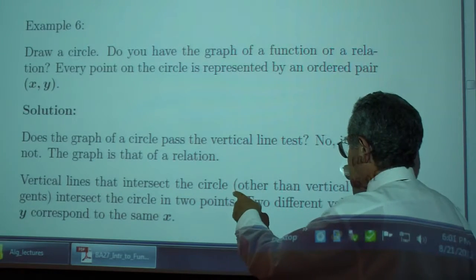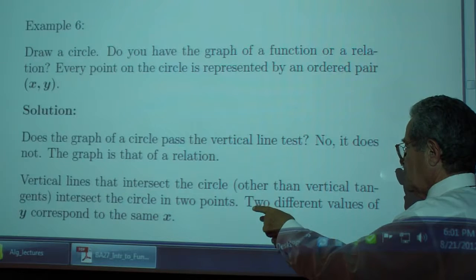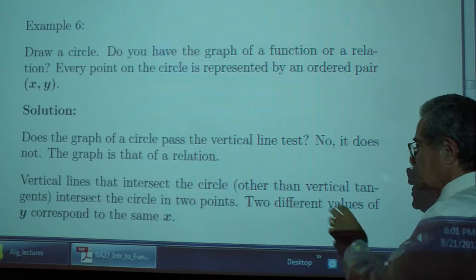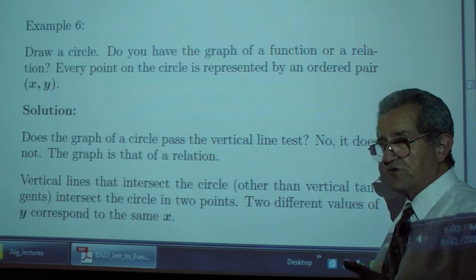Vertical lines that intersect the circle, other than vertical lines tangent to the circle, intersect the circle in two points. You have more than one point on the vertical line, you don't have a function.